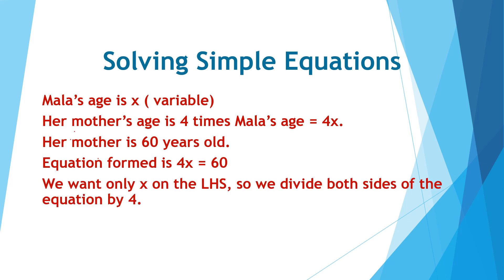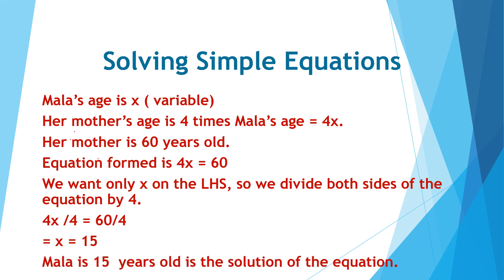We want only x on the left hand side, so we divide both sides of the equation by 4. On dividing by 4, we get x is equal to 15. Mala is 15 years old is the solution of the equation.